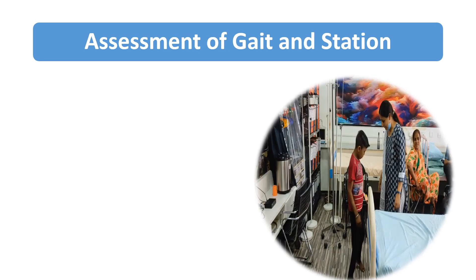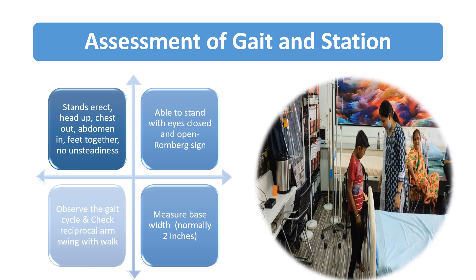For the assessment of gait and station, we tell the child to stand from the lying down or sitting position. We observe if the child is able to stand erect — head up, chest out, abdomen in, feet together — with no unsteadiness. Then we tell the child to stand with eyes closed. If the child cannot maintain balance with eyes closed, Romberg sign is positive.